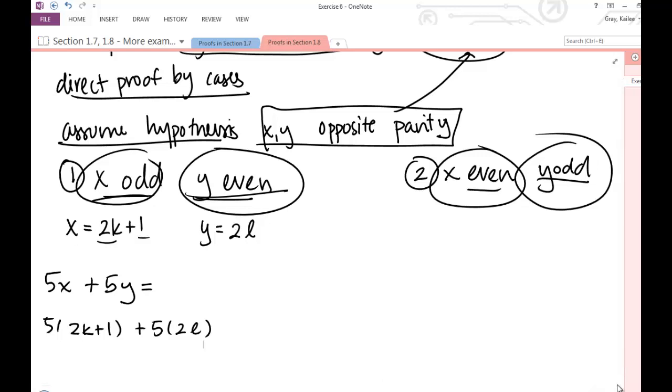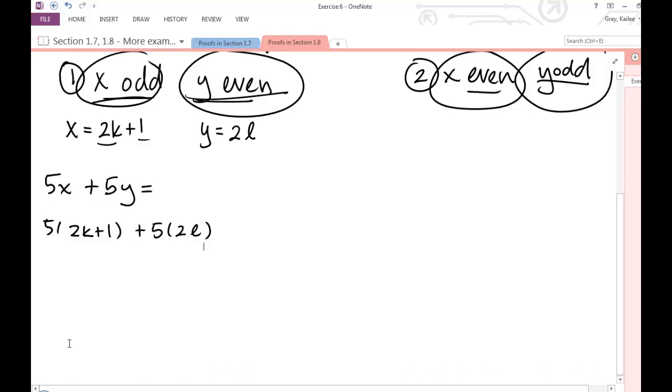So now, again, I want to rewrite this algebraic expression here as 2 times some integer plus 1. So I want to do some combining of like terms and to see what I can do. So on my first term here, I'm going to go ahead and distribute that 5 to both of my terms. And then I'll just multiply this out so I get 10l.